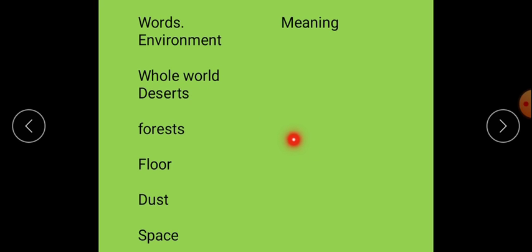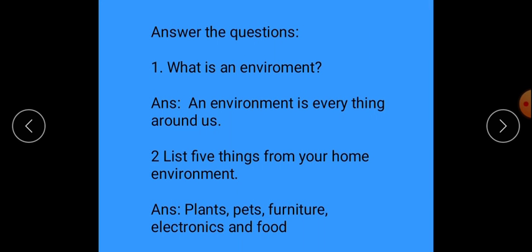Next word is floor - floor means farsh. Next word is dust - dust means dhul. Next word is space - space means jaga. Now, answers to the questions.